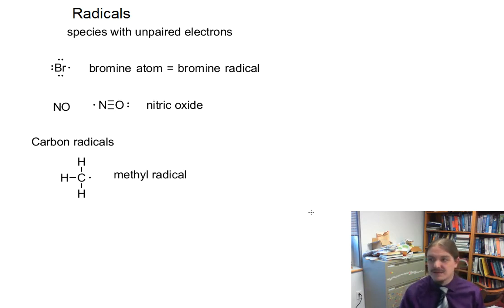You encountered some things that are actually radicals in general chemistry, like the bromine atom. The bromine atom has seven valence electrons, which, because there's an uneven number of them, one of them will have to be unpaired. And so, in the context of radical chemistry, we're going to refer to the bromine atom as the bromine radical.